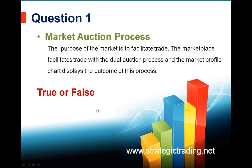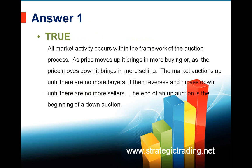The purpose of the market is to facilitate trade. The marketplace facilitates trade with the dual action process, and the market profile displays the outcome of this process — and that is true. All market activity takes place within the framework of this auction process. The key concept is that markets will auction up until there are no more buyers, and then they will reverse down until there are no more sellers. The end of an up auction is basically the beginning of a down auction — a very key and important concept.